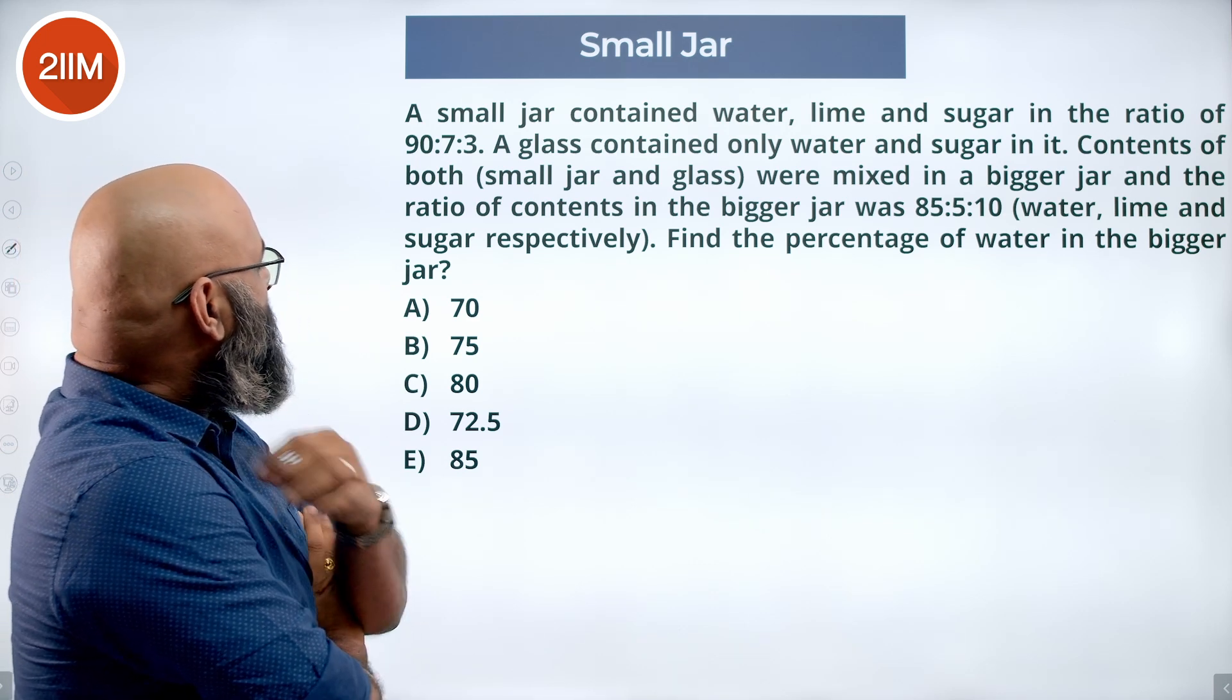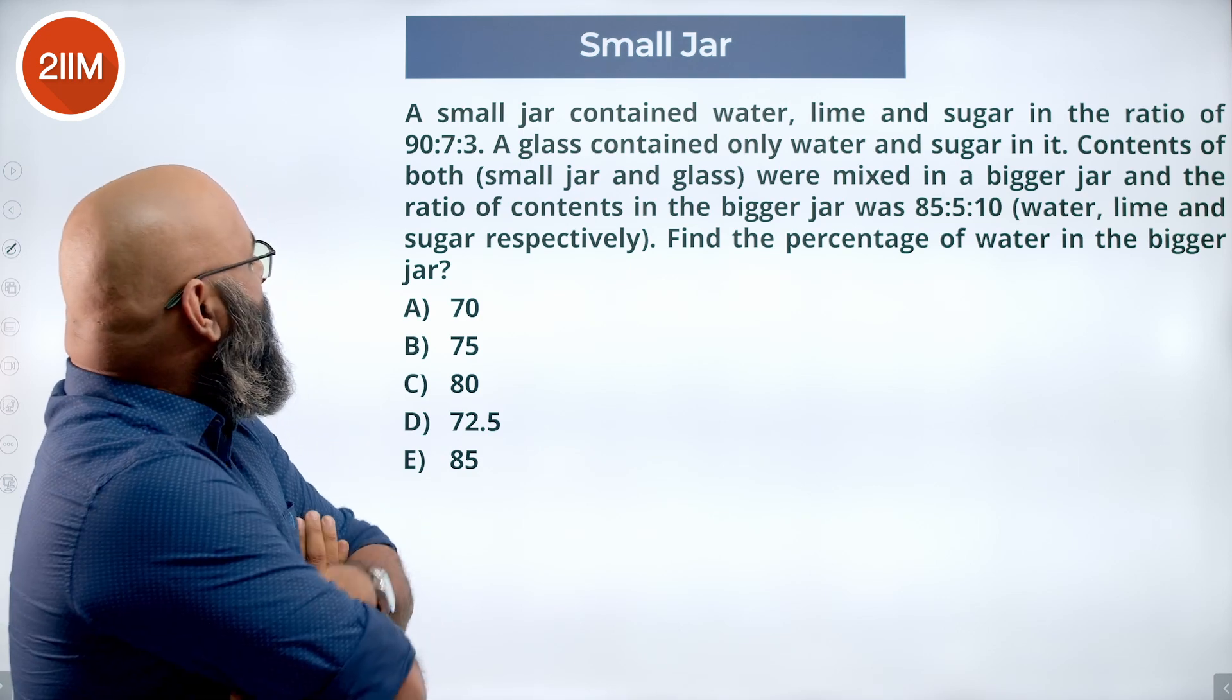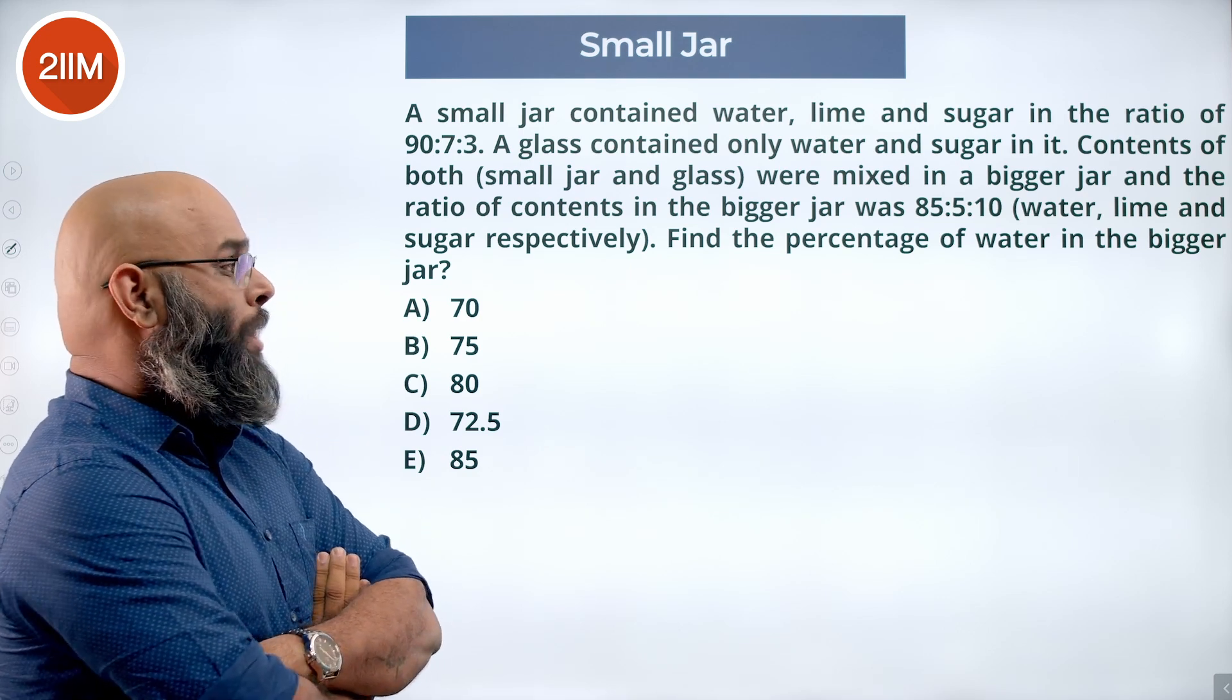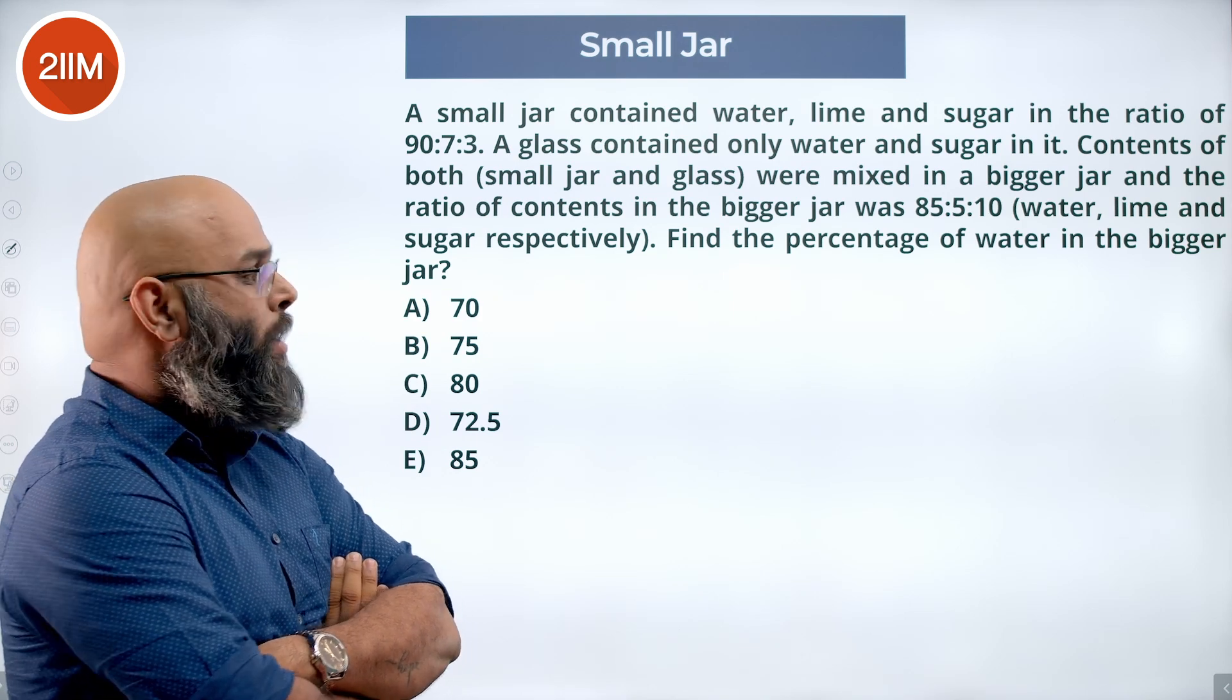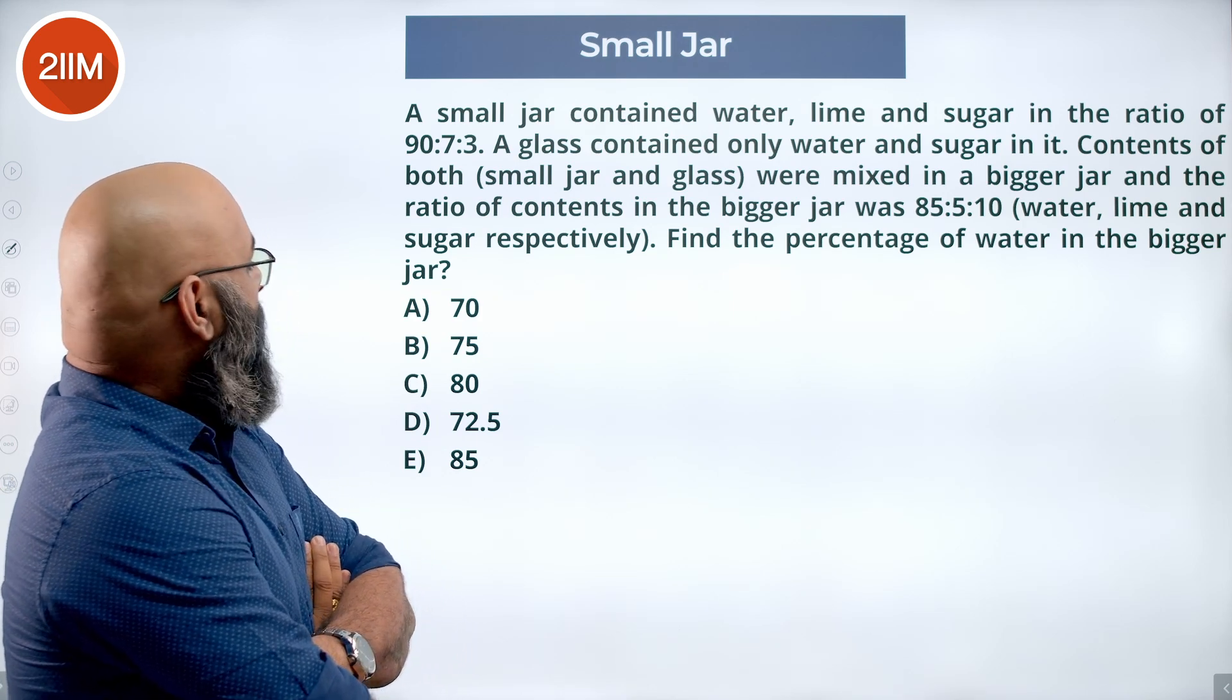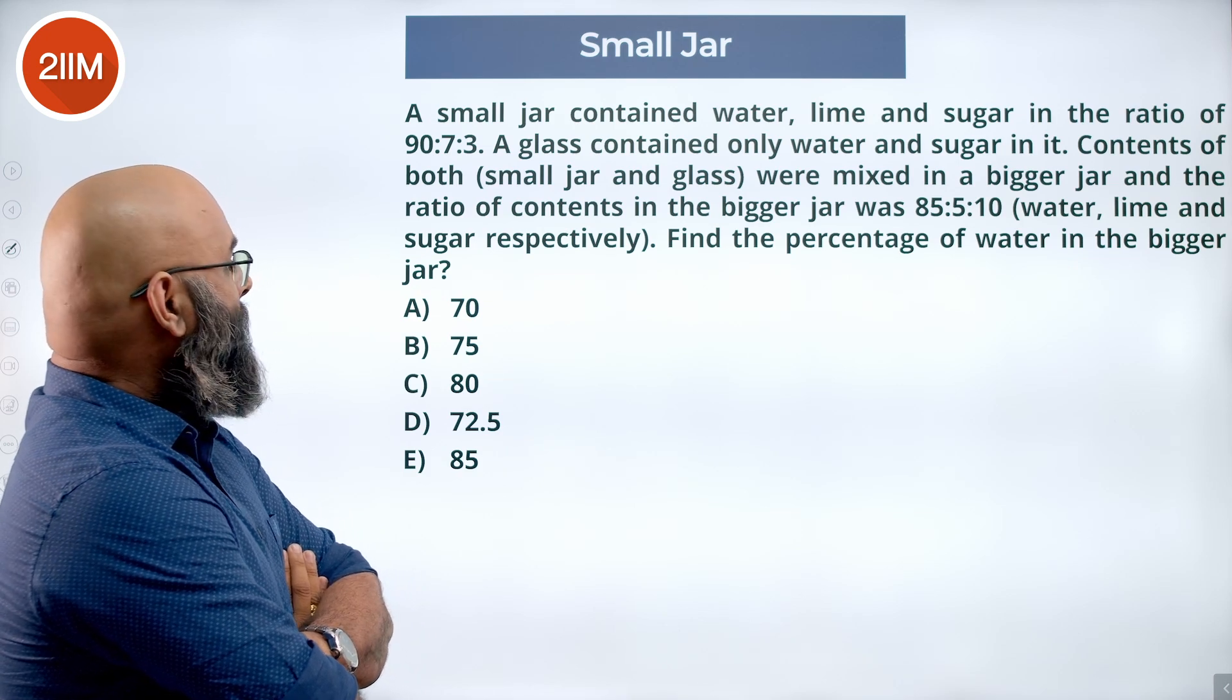Contents of both small jar and glass were mixed in a bigger jar, and the ratio of contents in the bigger jar was 85:5:10, water, lime, and sugar respectively. Find the percentage of water in the bigger jar.